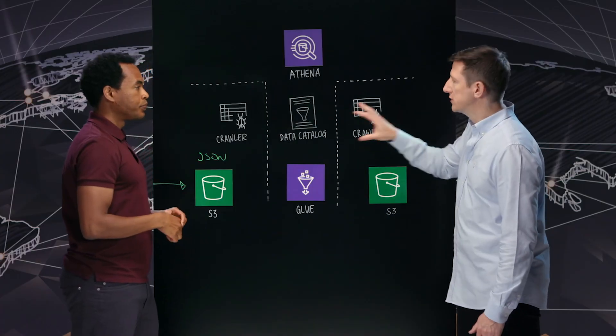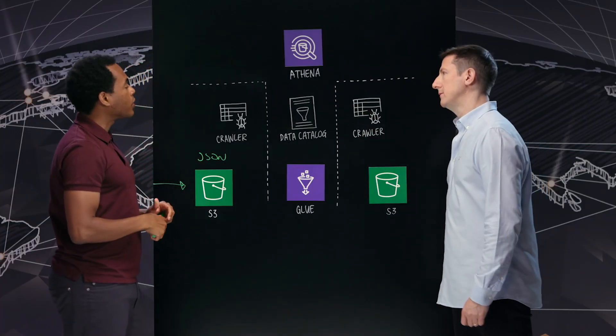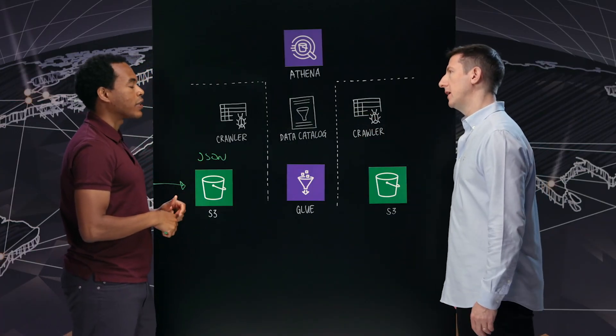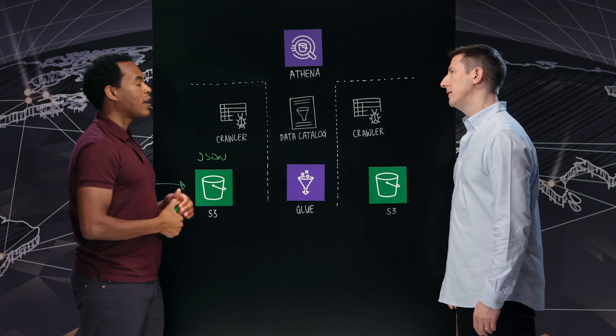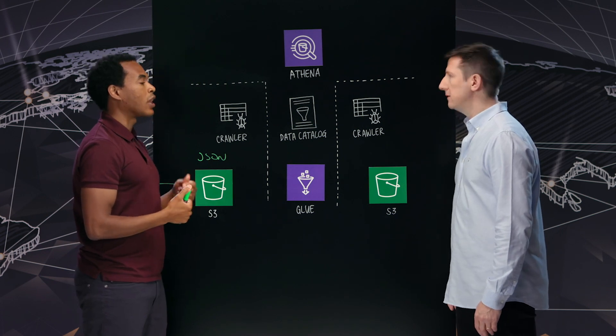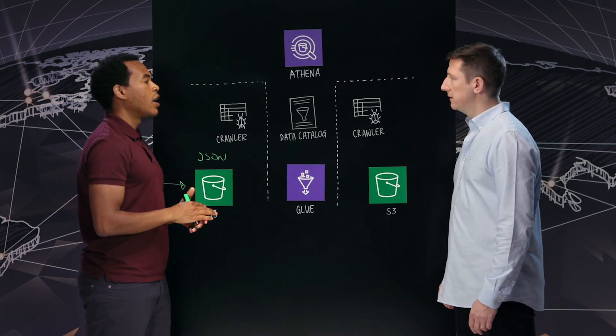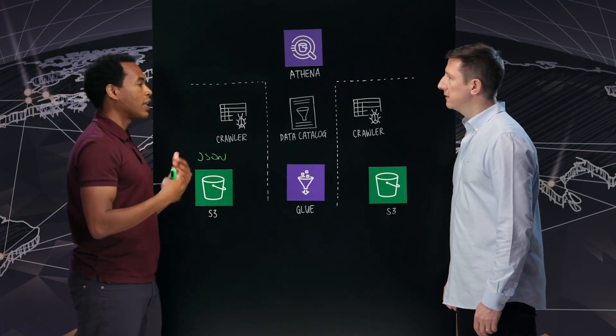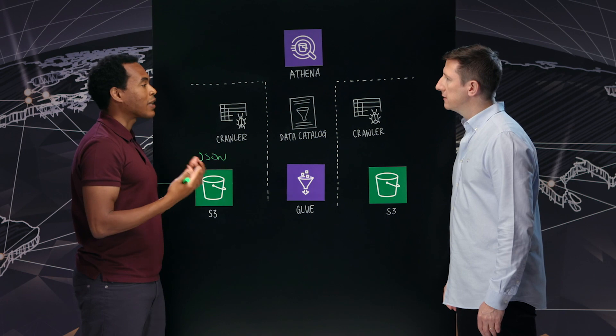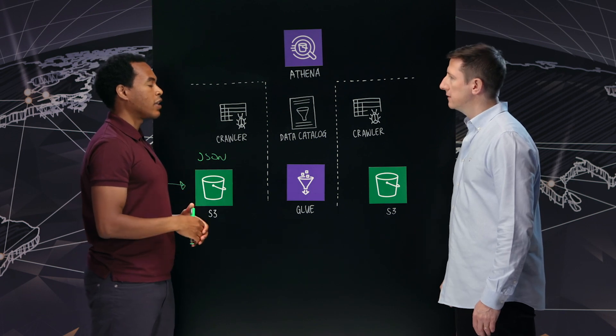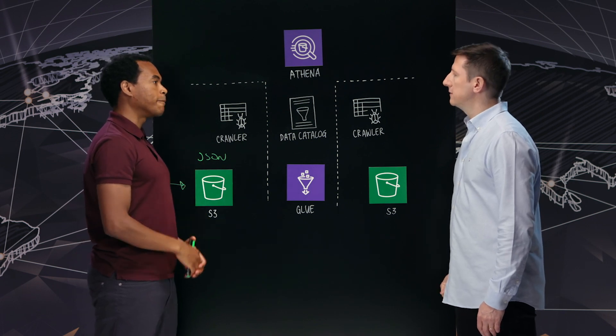What kind of information is stored in the data catalog? In the catalog, you can see things like column type, column name, table name — basically it allows you to inspect the schema of the information coming in.